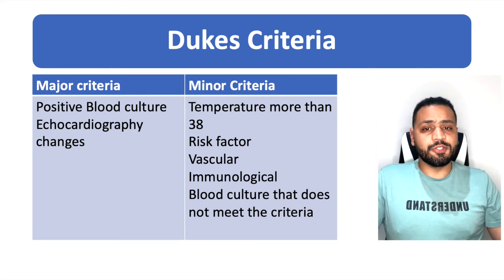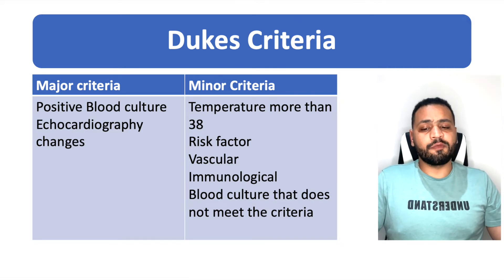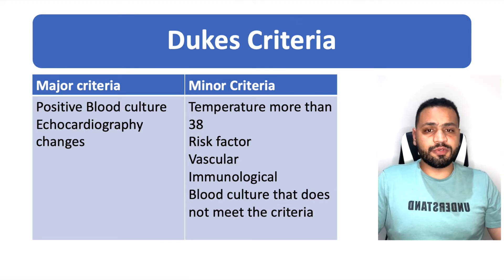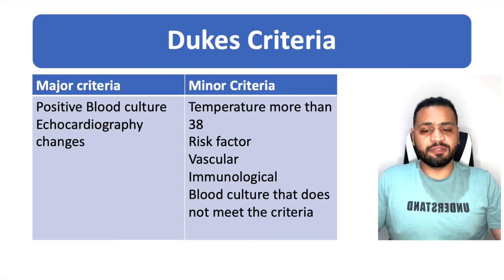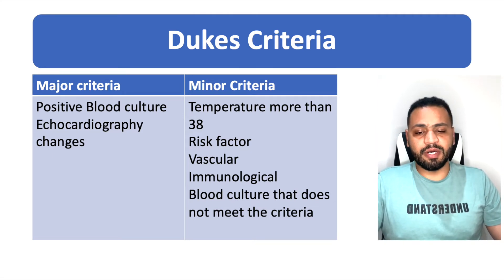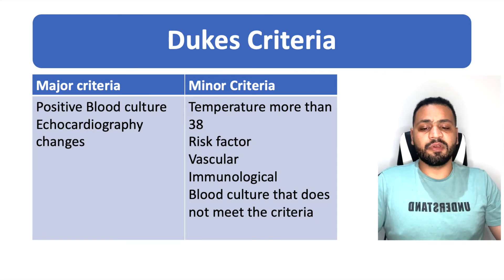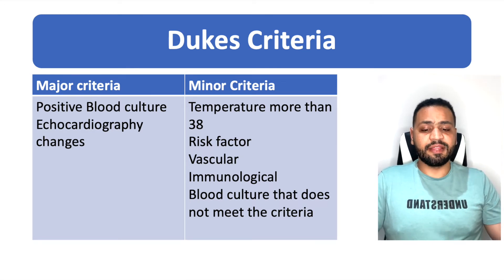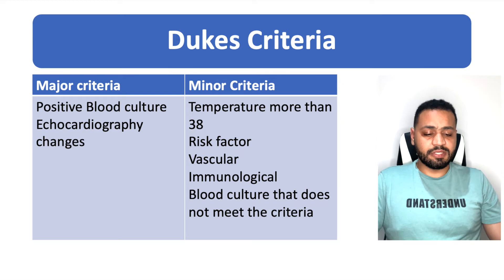To sum up Duke's criteria: if you have two major criteria positive, infective endocarditis is diagnosed. If you have one major and three minor criteria, that is confirmative for the diagnosis. If you have five minor criteria, that is also confirmative for the diagnosis of infective endocarditis.